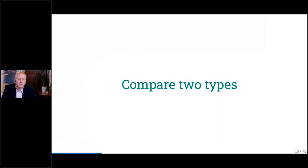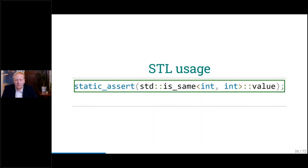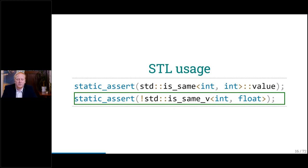Fortunately, we have the STL — the standard template library — and it already implements this. For example, if we compare two integers, this should be true, so the static_assert says true. And since C++17, we also have a shorter version where we don't have to explicitly say `::value`. And when we compare an integer and a float, this is obviously not true.